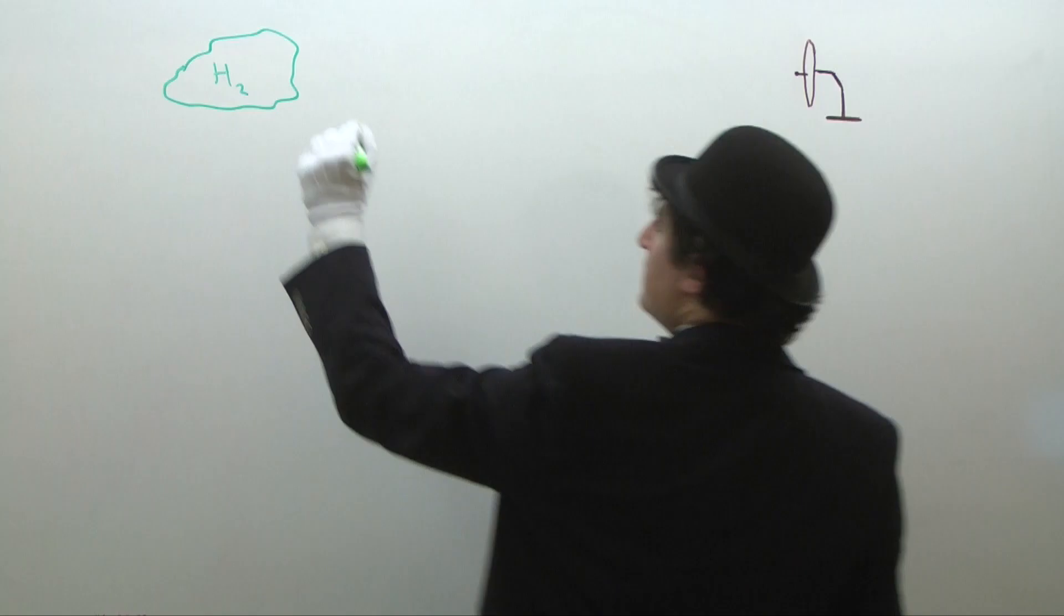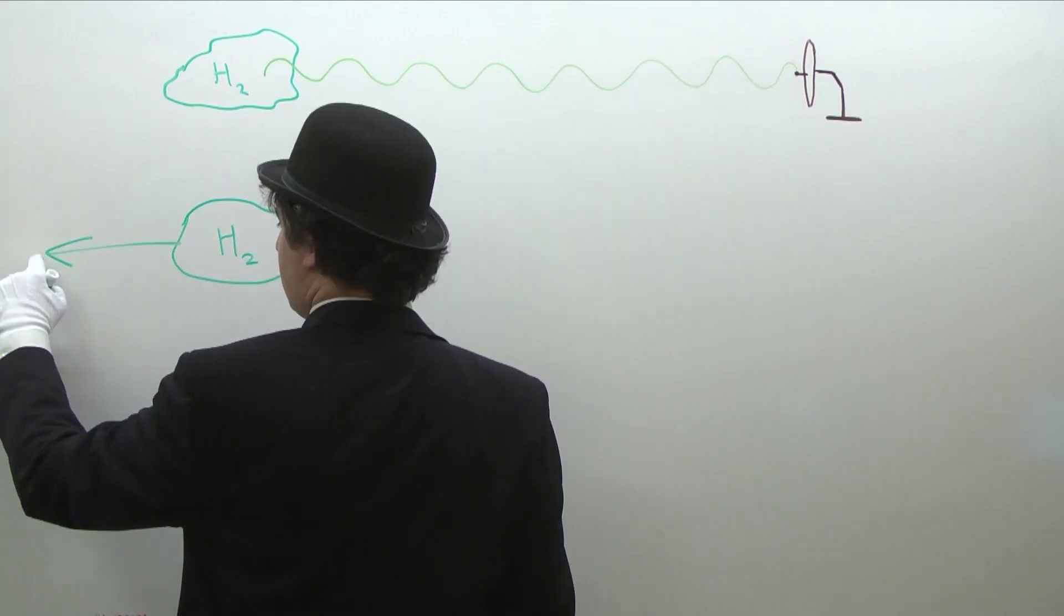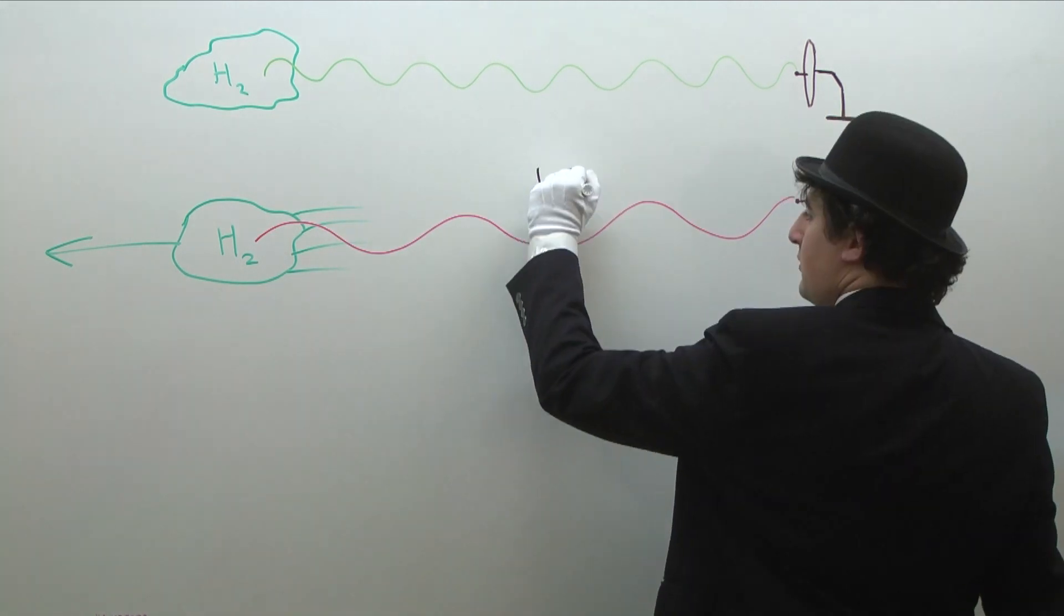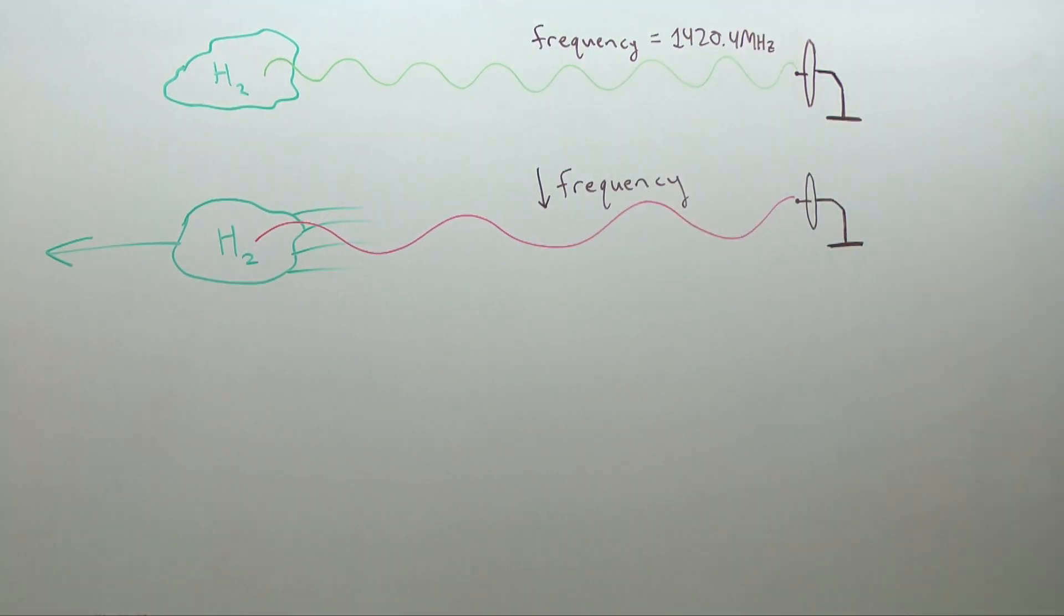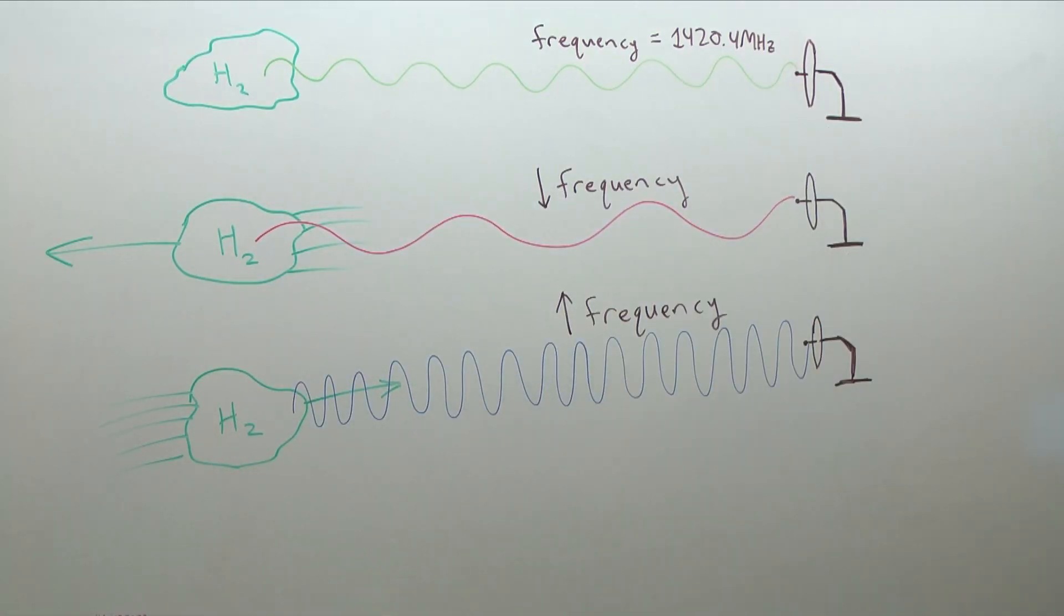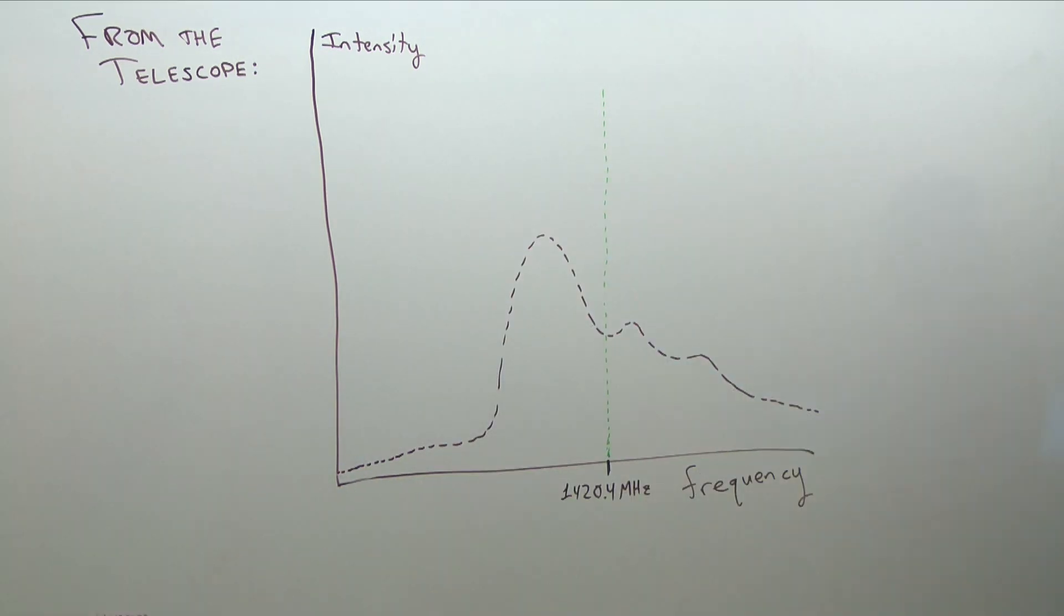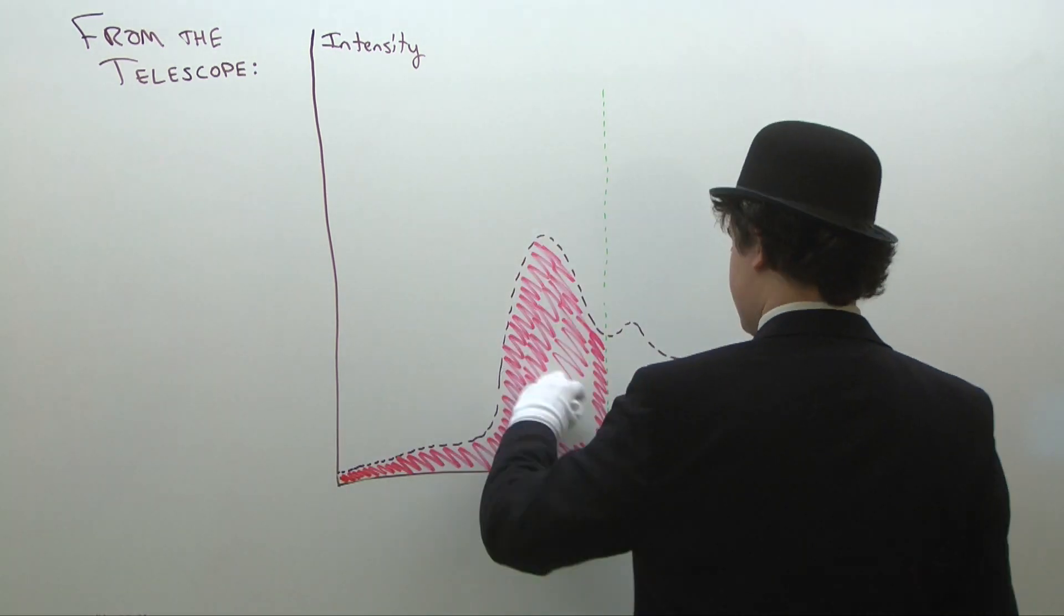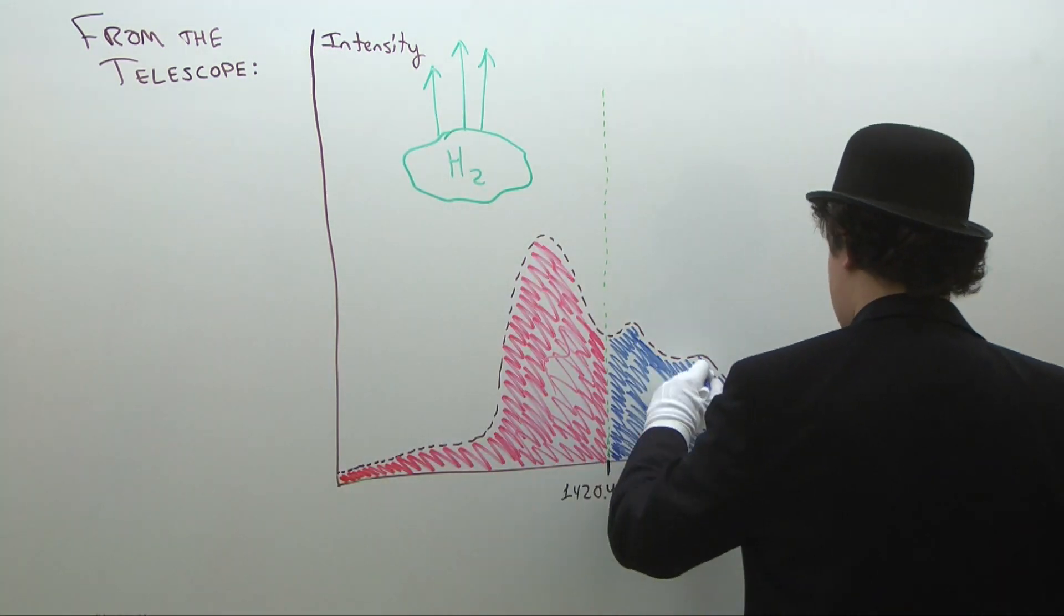Normally, all of these radio waves would be near the frequency of 1420.4 megahertz. But the waves from gas clouds moving away from us are stretched out, and are thus at a slightly lower frequency. The opposite is true for waves from gas which is moving towards us. As a result, the data we receive from the telescope tells us how fast the gas is moving in the direction we're looking.